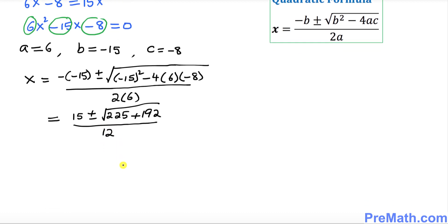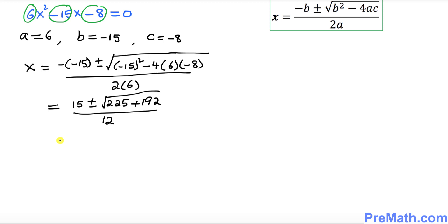Let's go ahead and simplify this one a little more. So that's gonna be 15 plus or minus, so that's gonna become 417 divided by 12. So we got this x equal to this much.